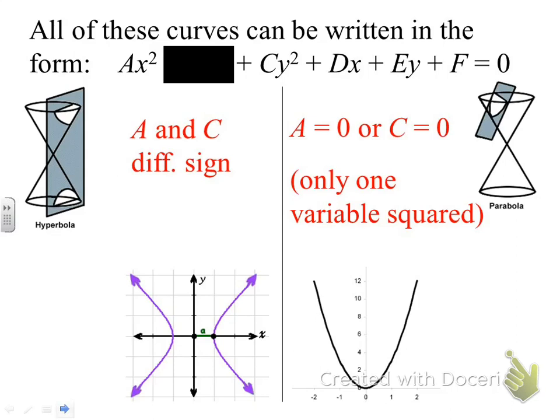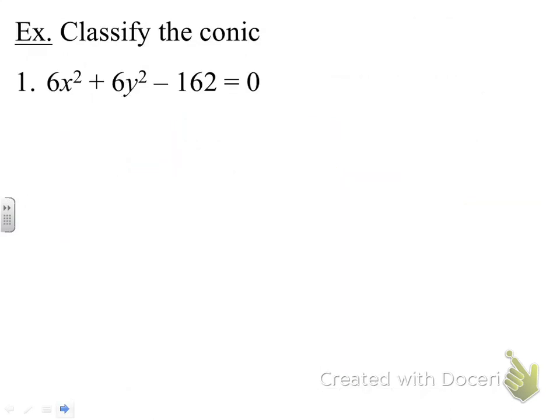Let's flip your packet over to page 2, that's the back of this front page, and we're going to work on classifying some conic sections. To classify the conic section, we really have to be aware of two things. The two squared terms have to be on the same side of the equal sign.